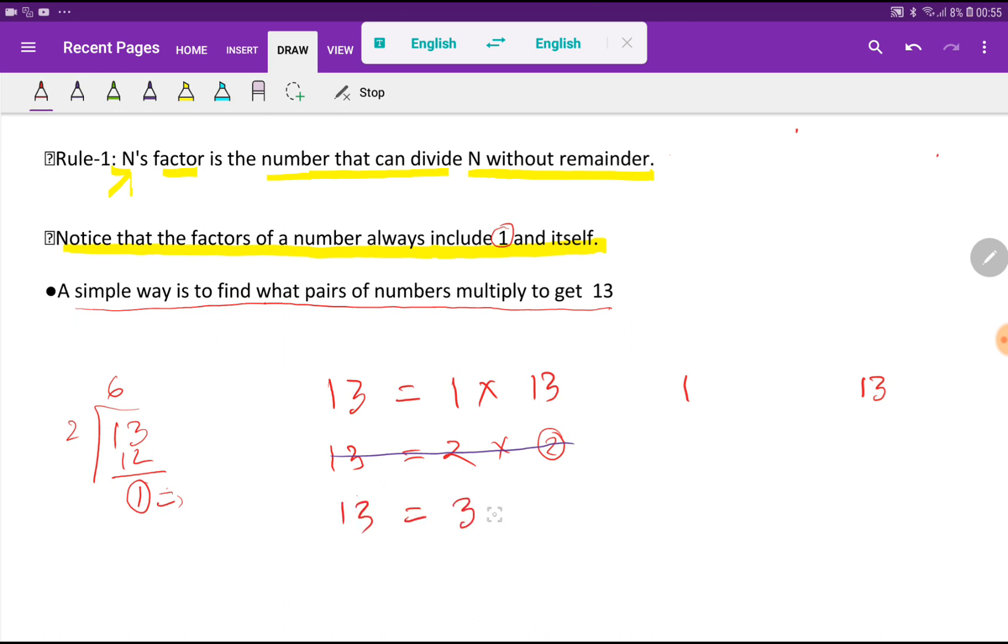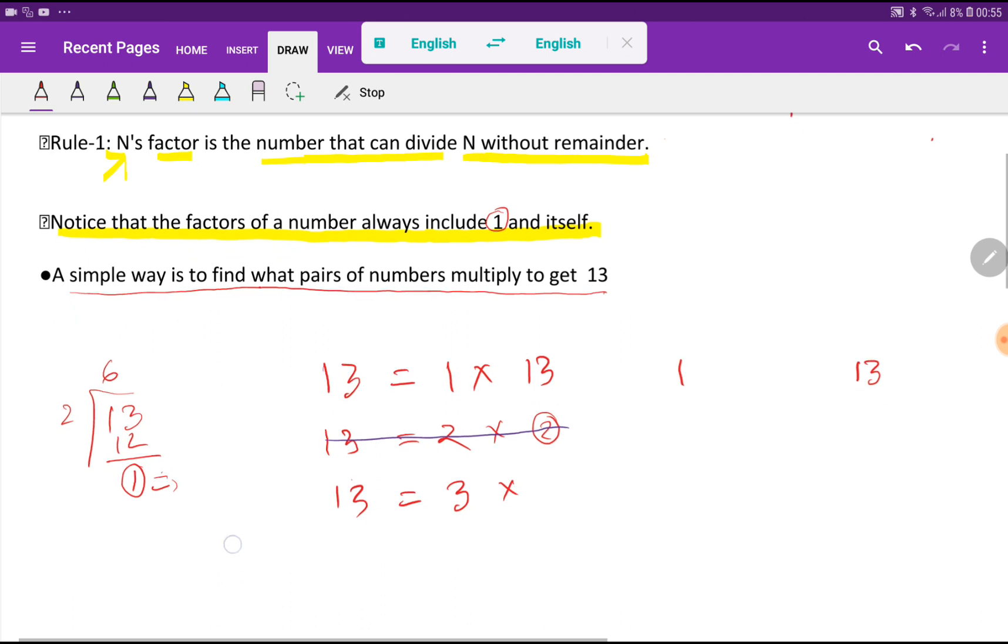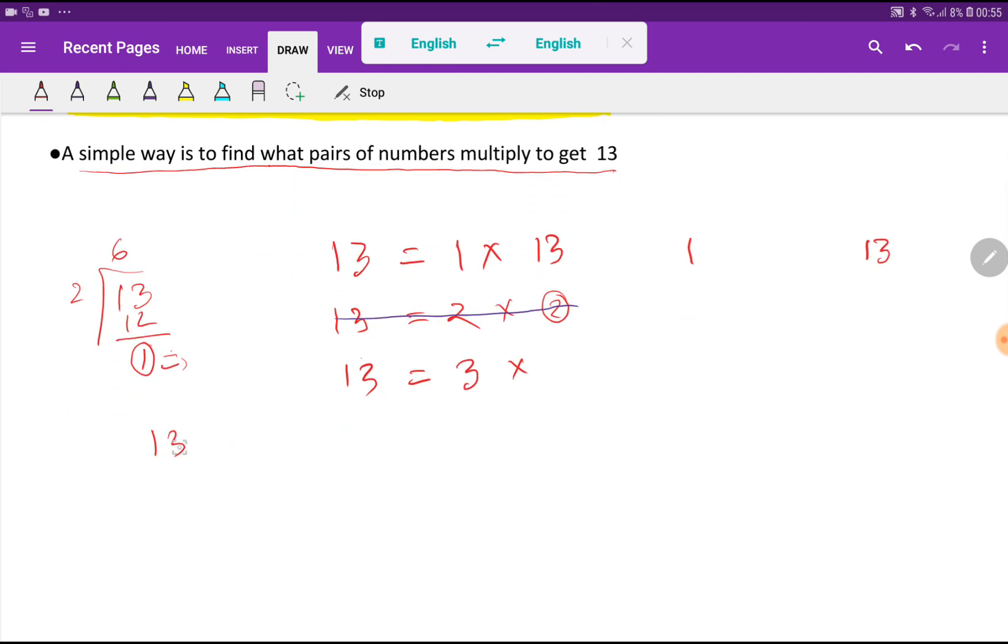Now we'll take 3 and we'll try to divide 13 by 3. So look, you will get remainder 1. So 13 is not divisible by 3, so 3 is not a factor of 13.